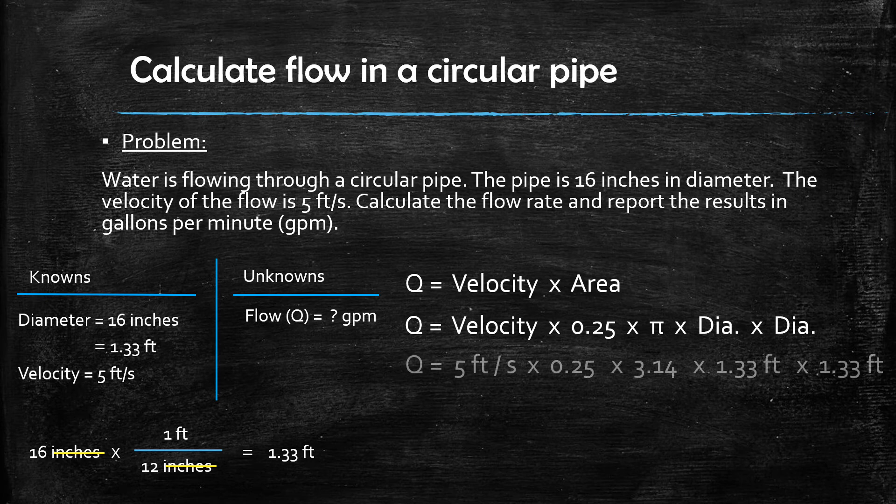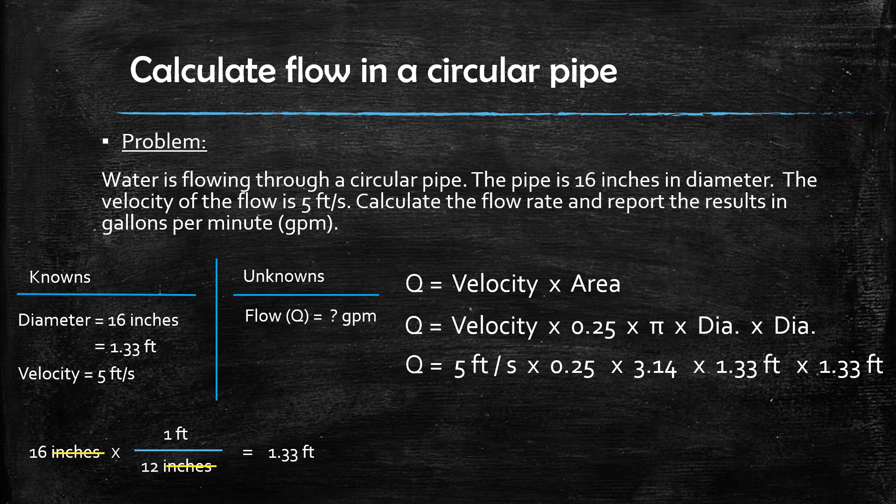Therefore the flow rate is equal to 5 feet per second times 0.25 times 3.14 times 1.33 feet times 1.33 feet which is 6.95 cubic feet per second.